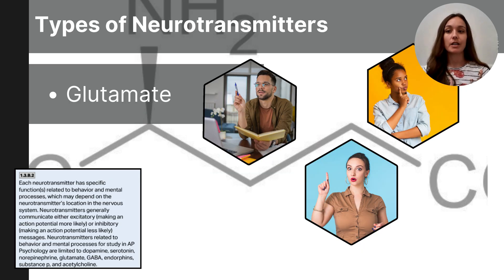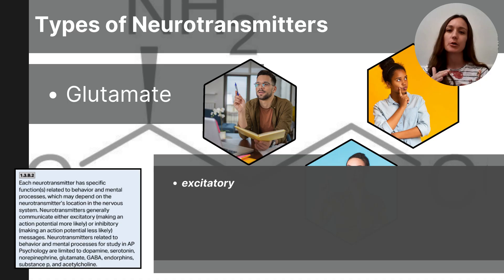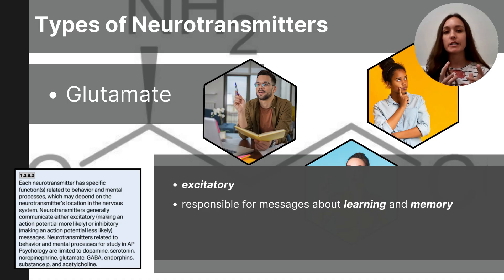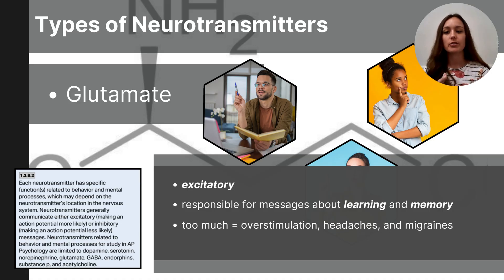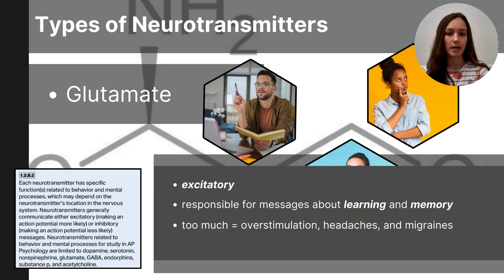Glutamate, on the other hand, is an excitatory neurotransmitter. It helps increase neural activity and is crucial in the cognitive processes of learning and memory. Too much glutamate in the brain and nervous system can cause overstimulation, potentially leading to headaches or even migraines.